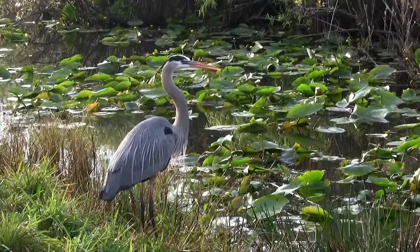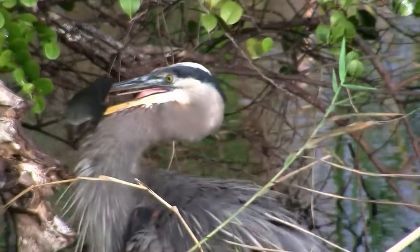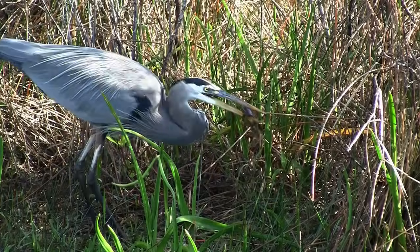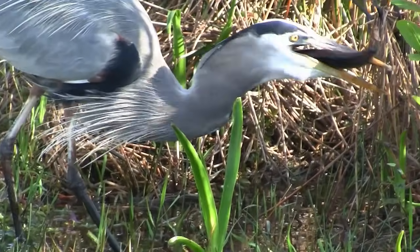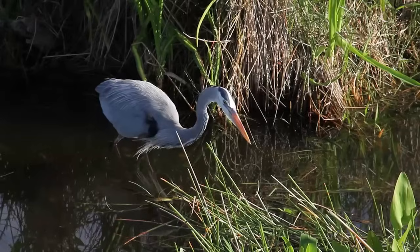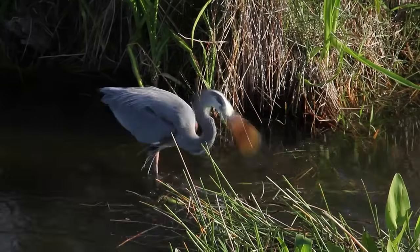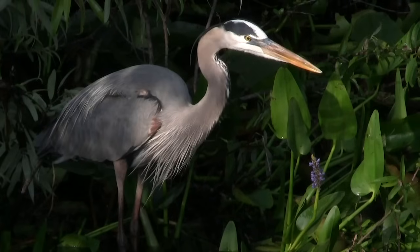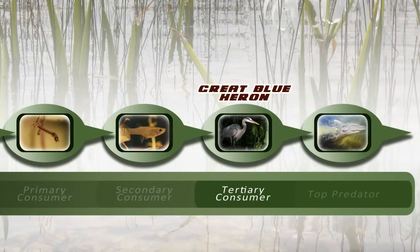The Great Blue Heron is a fish eater. He has a dagger-like bill designed for spearing and snatching swimming prey. The Heron is able to nab some pretty big fish, but the Gambusia makes a nice appetizer. Because he mostly eats secondary consumers, this makes the Great Blue Heron a tertiary consumer, and gives him a spot on our fourth link.